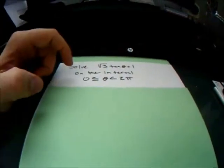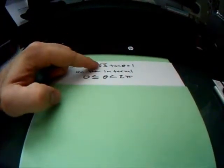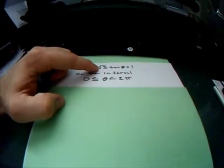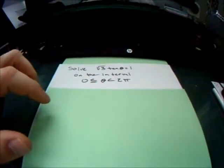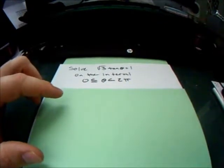Our first step is to get rid of the √3 on this side and bring it over to the other side so we have tan θ all by itself. So we get tan θ = 1/√3.